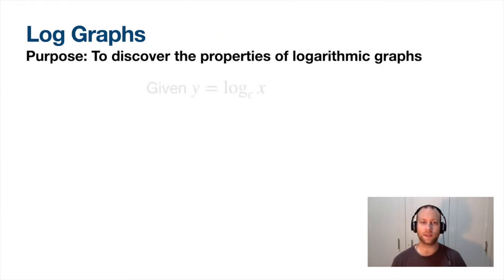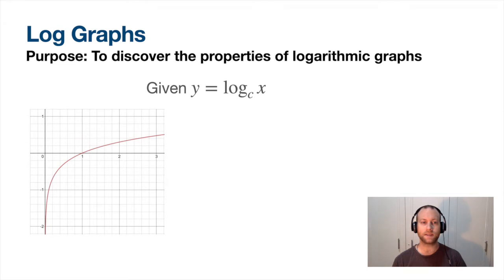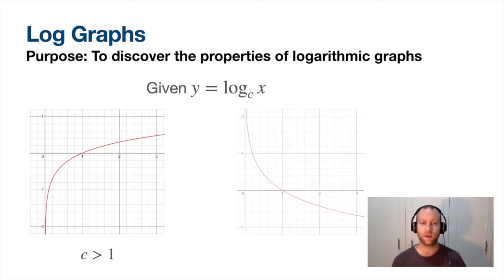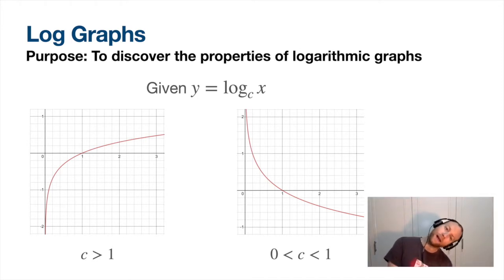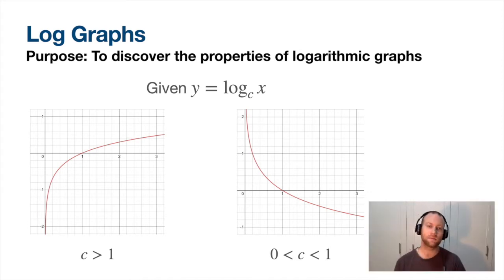What do log graphs look like? If this is your original equation, this is what a graph looks like provided c, the base, is bigger than one - it's going to look like this. If the base is between zero and one, you're going to have something that looks like this. An interesting tidbit: if you slant your head to the side you'll see two exponential functions, one in growth and one in decay - interesting connection there.